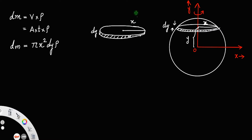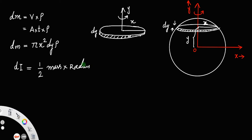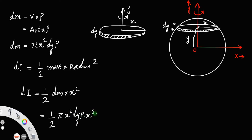The moment of inertia of a circular disc rotating about the y axis will be dI equal to half times mass times radius squared. That is, dI equals half dm times x squared. Substituting dm, this equals half times pi x squared dy rho times x squared, which can be written as half pi x to the 4th rho dy. That is the moment of inertia of the disc.